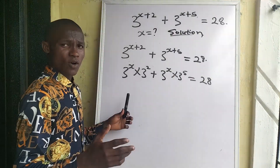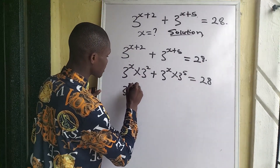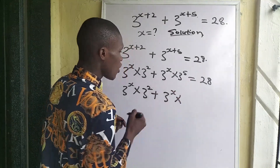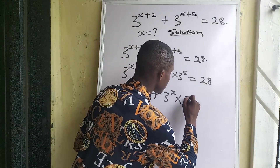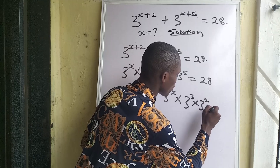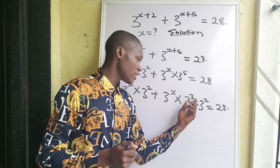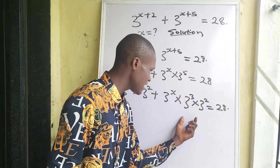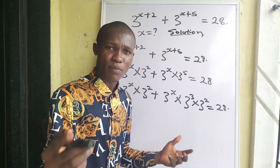We can still break this further. We have 3 to the power of x times 3 to the power of 2, plus 3 to the power of x times, and we want to break 3 to the power of 5. We can write 3 to the power of 5 as 3 to the power of 3 times 3 to the power of 2, equal to 28. Because 3 to the power of 3 times 3 to the power of 2 gives 3 to the power of 5, since 3 plus 2 equals 5.